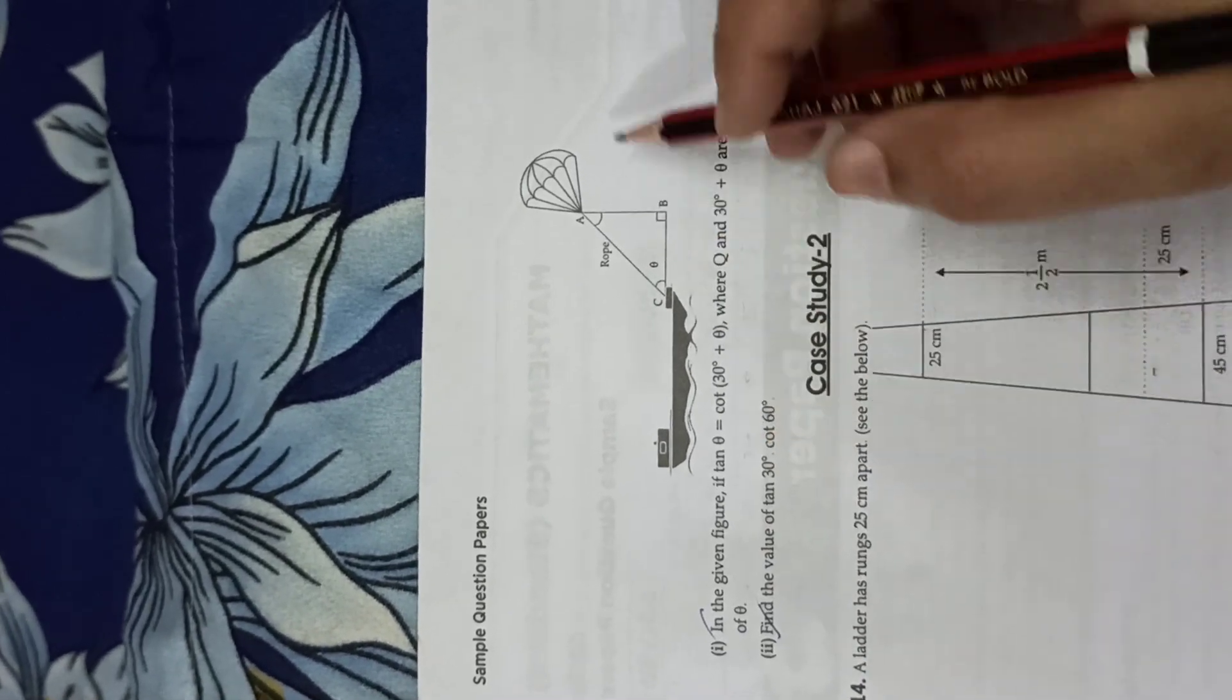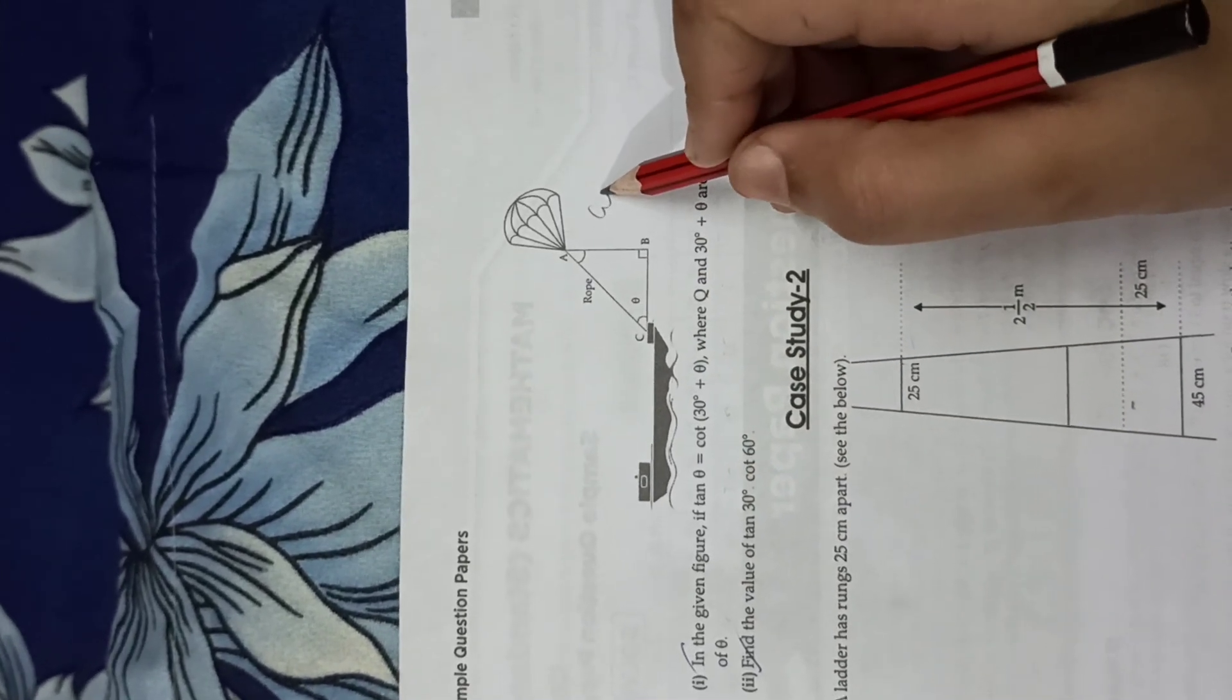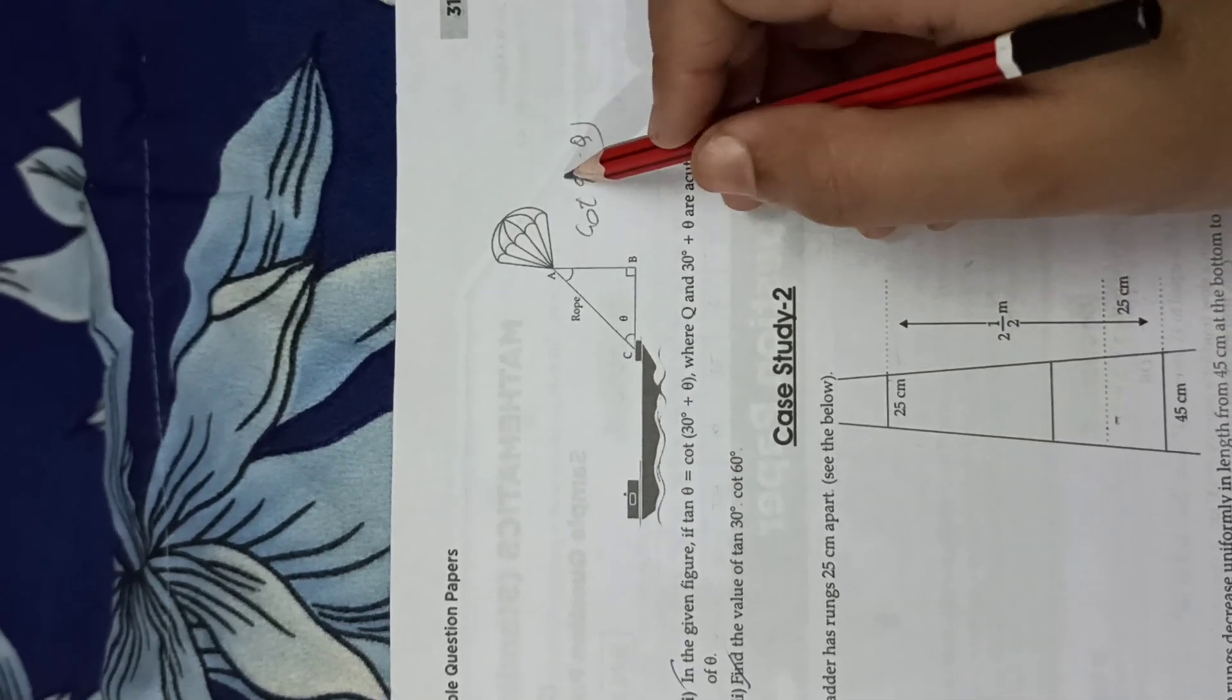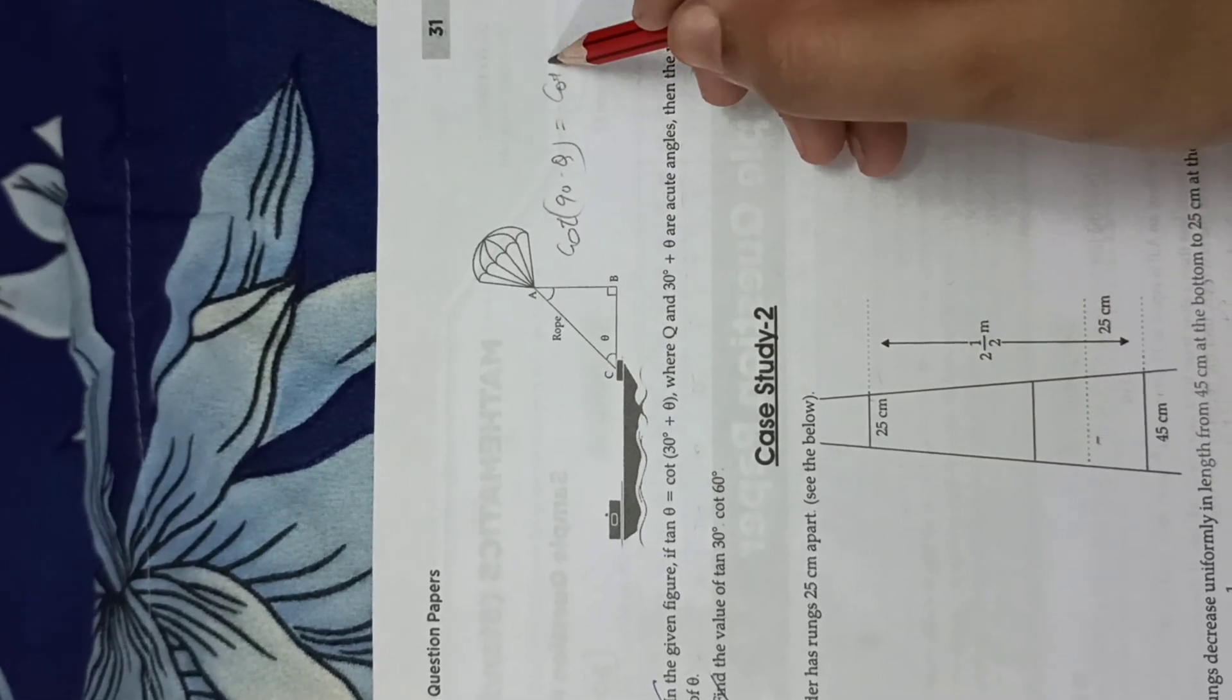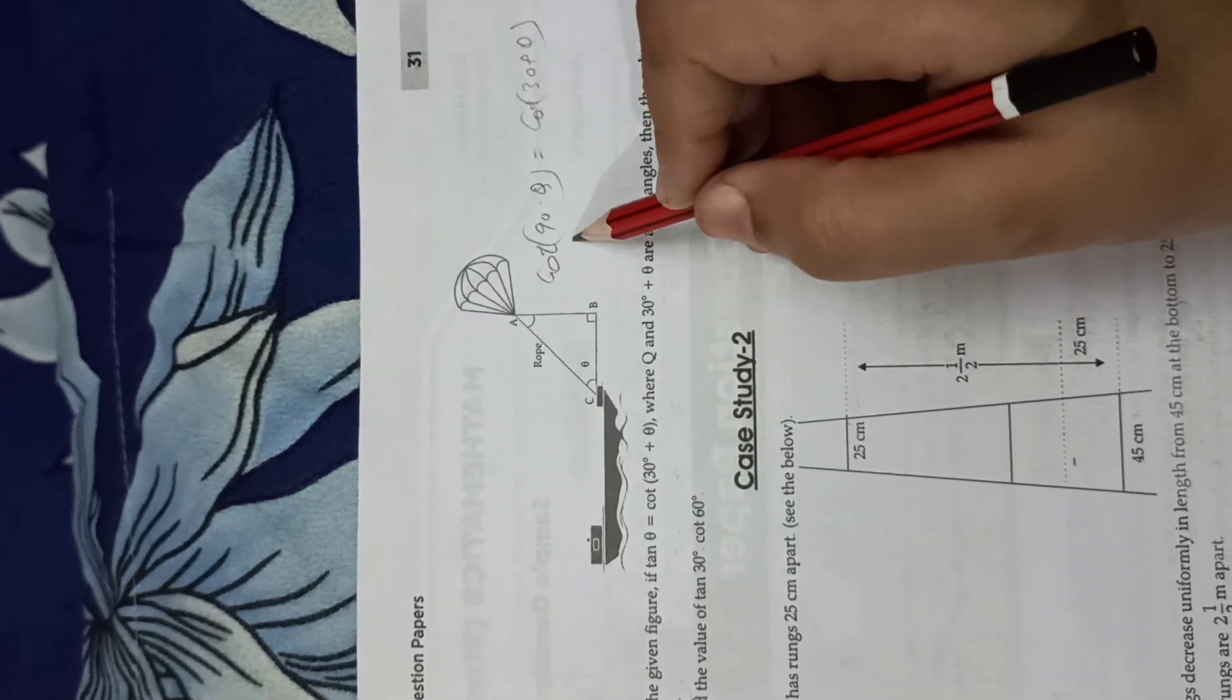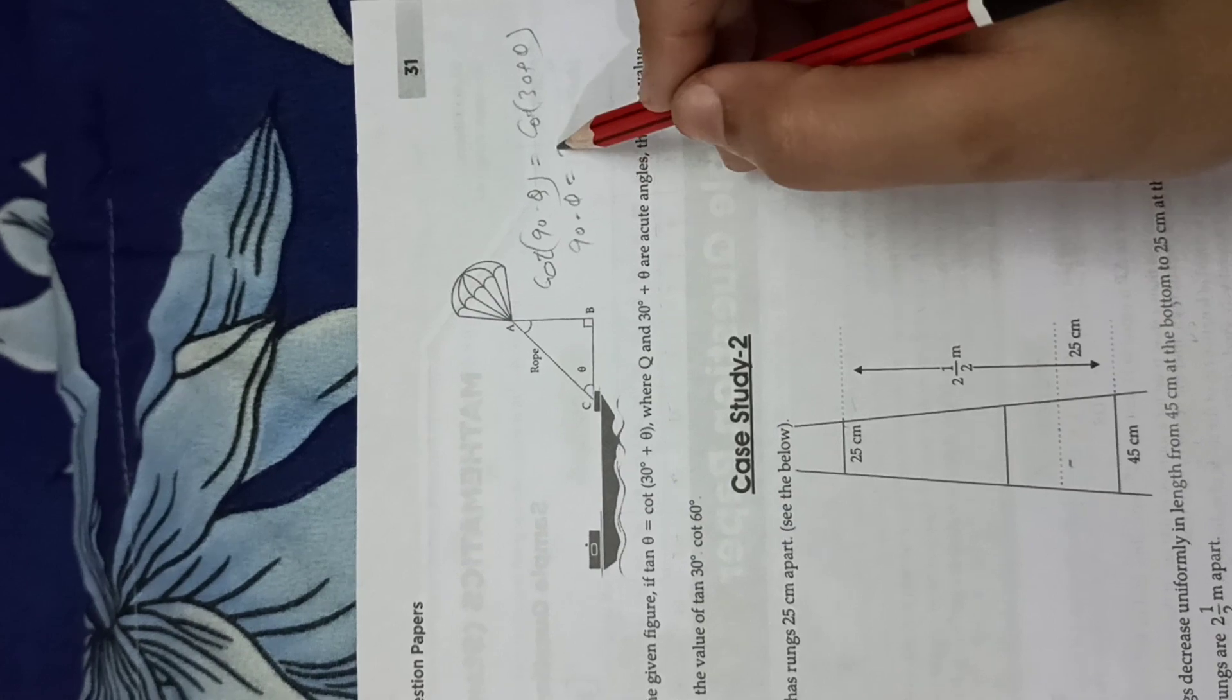Now, how can we write tan theta? We can write cot 90 minus theta is equal to cot 30 plus theta. Now cot cancels, so 90 minus theta is equal to 30 plus theta.